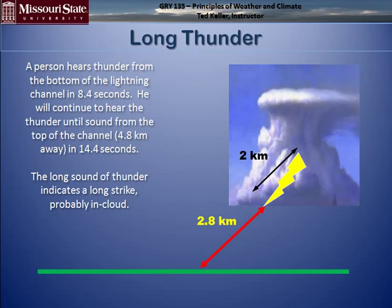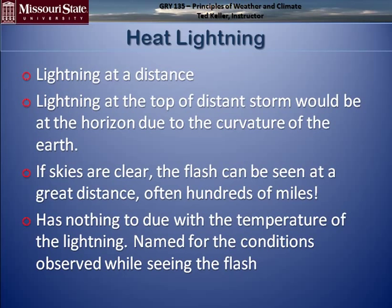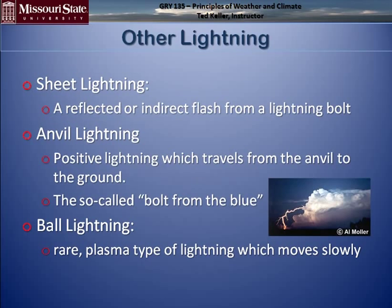Nothing special about heat lightning — it has nothing to do with the temperature of the lightning, but rather the temperature of you when you're observing it. It's probably hot outside, nighttime clear. If there's a thunderstorm in Iowa hundreds of miles away, lightning at the top of that storm can be visible on the horizon. Sheet lightning is nothing but reflected bolts of lightning. Anvil lightning is a positive lightning stroke — the so-called bolt from the blue. Ball lightning is a highly theoretical plasma-type ball that moves slowly and can explode. It hasn't been caught on tape much in nature, though it can be produced in a laboratory.